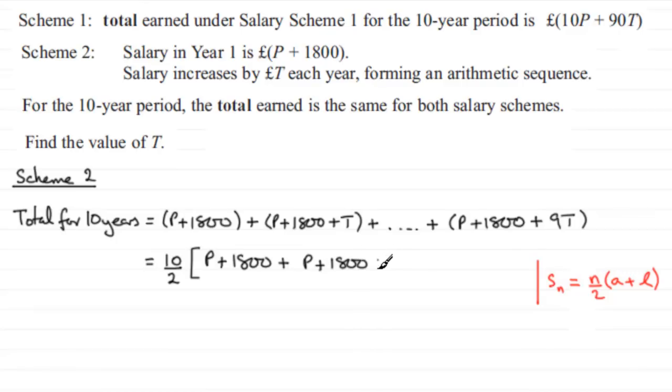If we simplify this, 10 divided by 2 is 5. Then we've got P plus P, which is 2P, and 1800 plus 1800 is 3600, plus 9T.